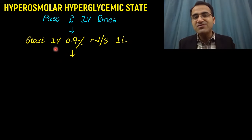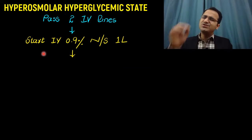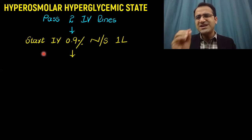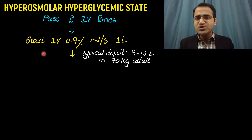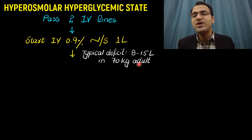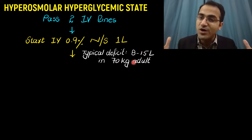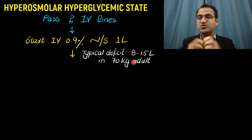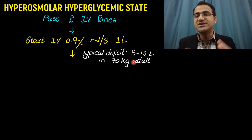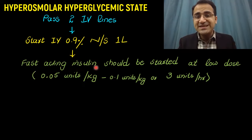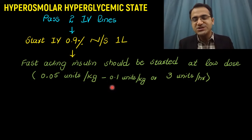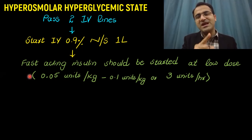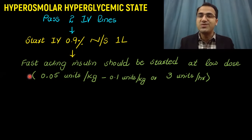You pass two IV lines and start IV 0.9% normal saline. Dehydration is the most important component of HHS and correcting it is the main priority. Typically a 70 kg adult would have a deficit of 8 to 15 liters, so you give lots of fluid to correct the hyperosmolarity that has accumulated due to hyperglycemia and diuresis. Fluid replacement is the main part of HHS treatment — proper fluid replacement can correct both hyperglycemia and hyperosmolarity.